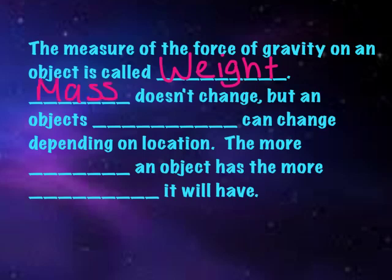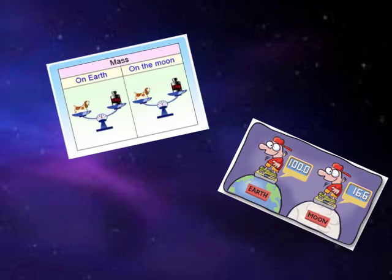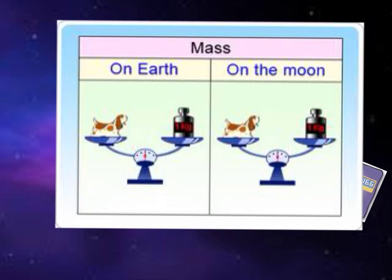The measure of the force of gravity on an object is called weight. Now, mass doesn't change, but an object's weight can change depending on location. The more mass an object has, the more weight it will have. Take a look at these two pictures — one represents mass and the other represents weight. Both the dog and the weight have the same mass on Earth, and they have the same mass on the moon. The amount of matter does not change; it stays the same on Earth and on the moon.